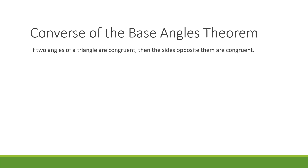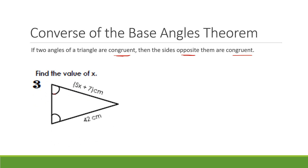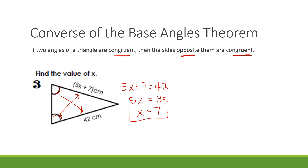Now we're going to talk about the converse of the base angles theorem. The converse says: if two angles of a triangle are congruent, then the sides opposite of them are also congruent. In the first example, it's giving us that the two base angles are congruent, so the sides opposite those base angles are also congruent. Congruent just means equals. So we know that 5x + 7 = 42. Solving: 5x = 35, so x = 7.